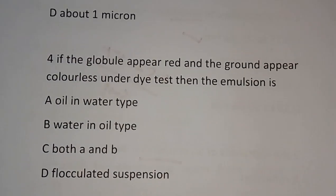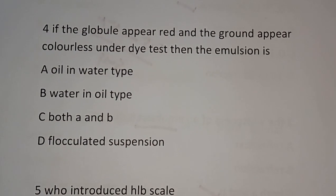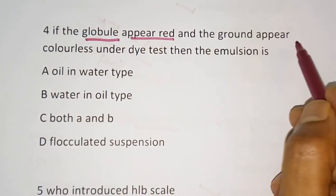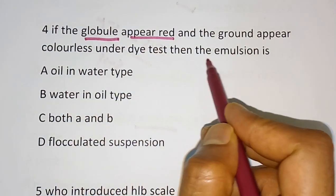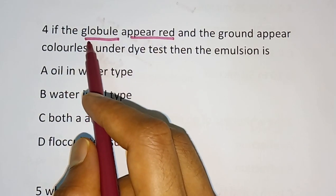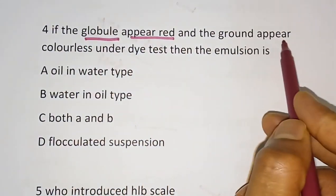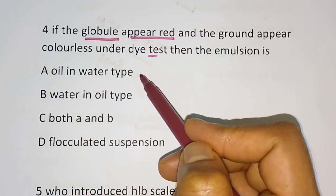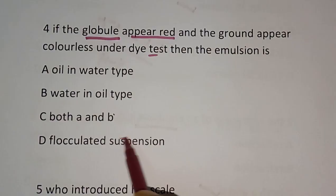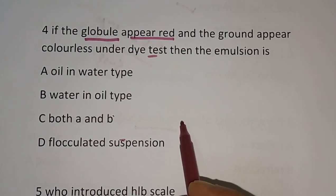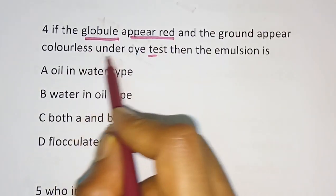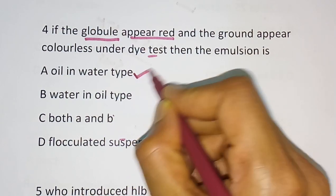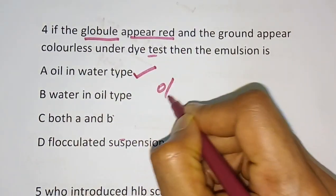Question number 4: If the globule appears red and the ground appears colorless under the dye test, then the emulsion is? Options are oil in water type, water in oil type, both A and B, or flocculated suspension. The correct answer is oil in water — when globules appear red and background is colorless under the dye test, the emulsion is oil in water type.